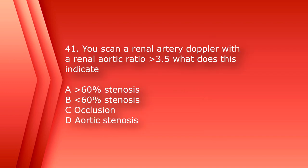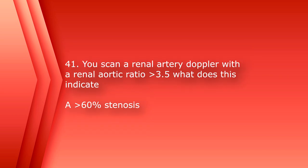Number 41: you scan a renal artery Doppler with a renal aortic ratio of greater than 3.5. What does this indicate? A. A greater than 60% stenosis, B. Less than 60% stenosis, C. Occlusion, or D. Aortic stenosis. The answer is A, greater than 60% stenosis.